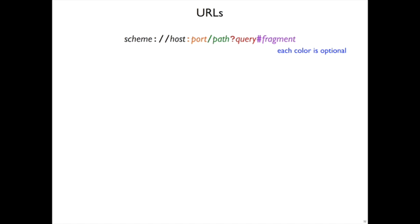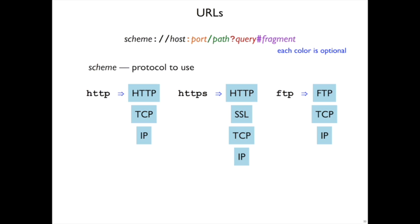You're probably familiar with how URLs work, but just as a recap in the context of the class, this is a general form of a URL. The first part, the scheme, specifies what kind of protocol to use — they don't have to be TCP or UDP protocols. A common one we'll look at is HTTP, which means a particular protocol on top of TCP, which of course is on top of IP.